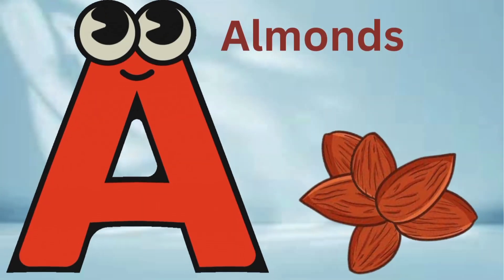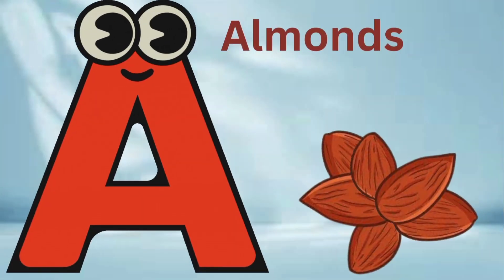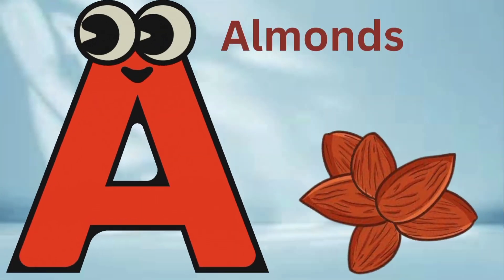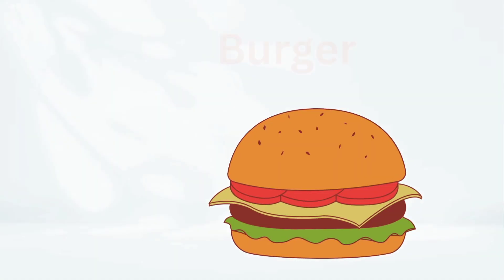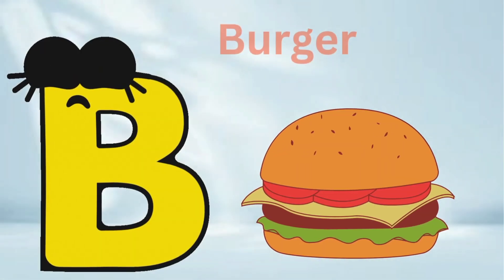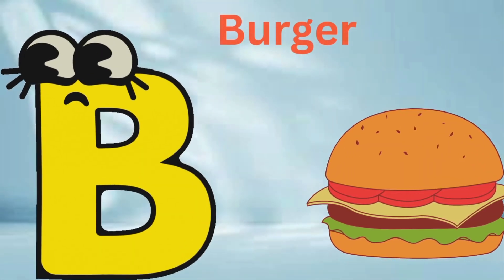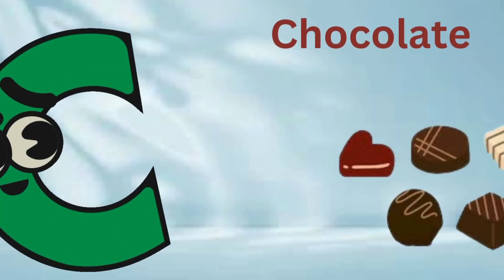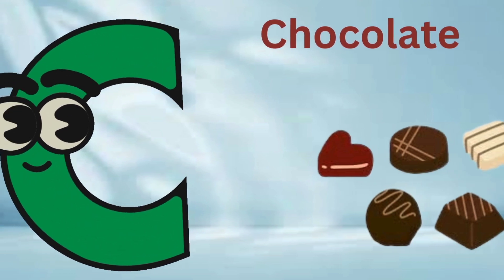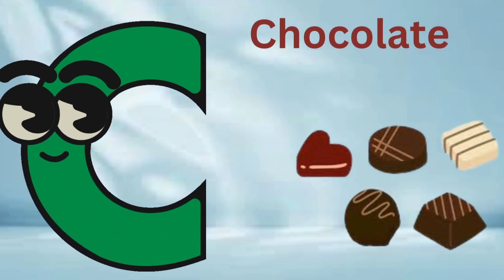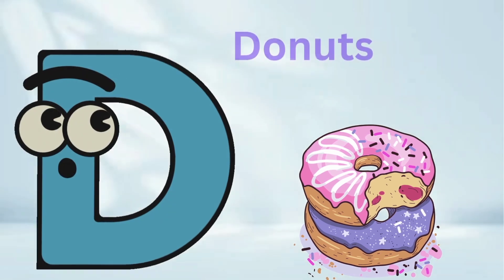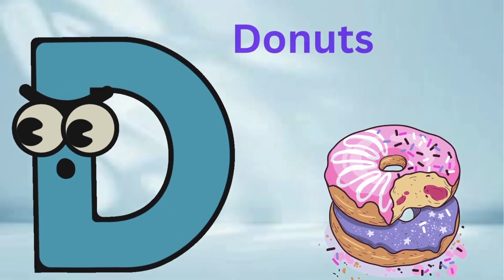A is for almonds. A, A, almonds. B is for burger. B, B, burger. C is for chocolate. K, K, chocolate. D is for doughnuts. D, D, doughnuts.